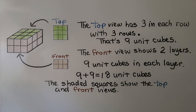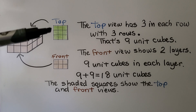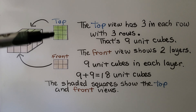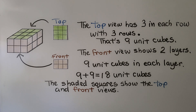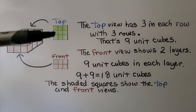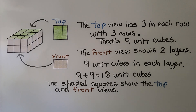For this rectangular prism, the top has three in each row and there's three rows. So it would look like this from the top — three in each row with three rows. That's nine unit cubes. We can even skip count by threes: three, six, nine.